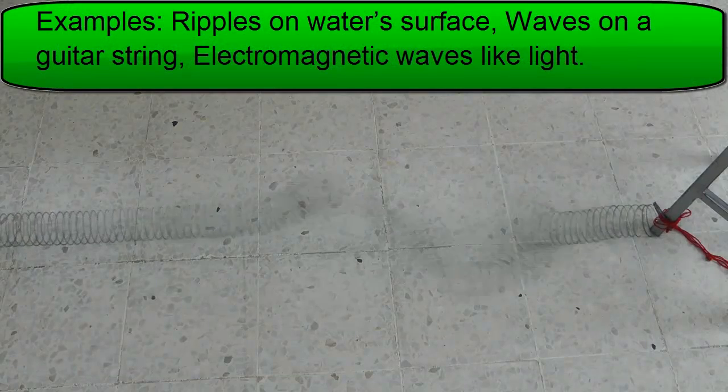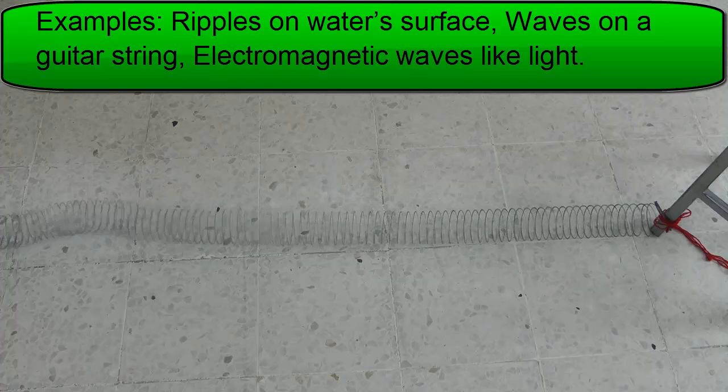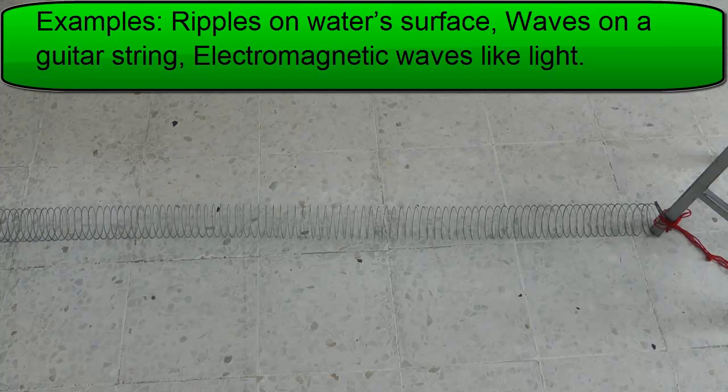So good examples of these kinds of waves, transverse waves, are ripples on a water surface, waves on a guitar string, and electromagnetic waves like light.